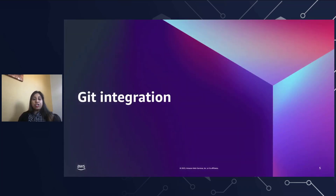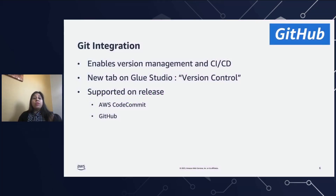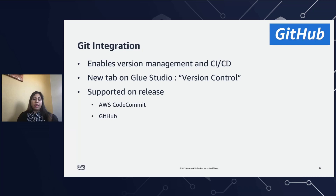Now let's discuss what changed with AWS Glue and how you can integrate Git. AWS Glue now offers version management and CI/CD. A new tab was introduced in 2022 in Glue Studio — you can go to the version control tab, put your GitHub or CodeCommit information, and connect your Git directly to Glue. As of now, AWS CodeCommit and GitHub are supported, but new features are coming. Our main focus here will be GitHub integration with AWS Glue.